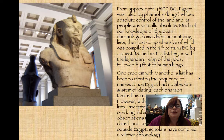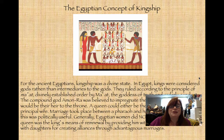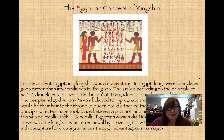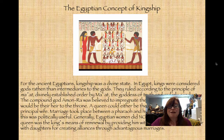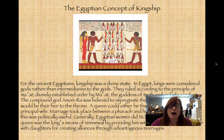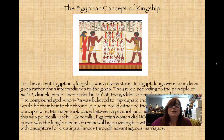One concept we will talk about is kingship. There was a time when most people believed that kings and rulers were divinely sent to rule. In ancient Egypt, kings were considered gods rather than just intermediaries to the gods. They ruled according to a principle known as Maat — established by Maat, a goddess of truth, orderly conduct, and order. Order was very important to them and the king represented it.